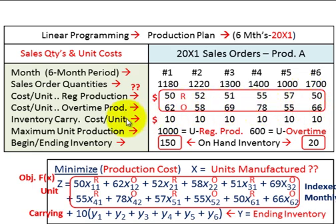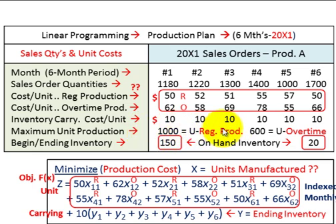The next thing we have to deal with is inventory carrying costs. At the end of the month, any ending inventory we're going to have to pay $10 per unit as the carrying cost, and that's the same for each of those six months. We also have a production constraint: the maximum units we can produce under regular production is 1,000 units. If we have to build any units in overtime, we can only build 600 units, and that's on a monthly basis for each of the months.